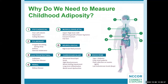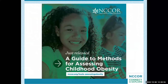There are numerous adverse health outcomes shown to be associated with obesity in children, which provides strong support for the potential value of measuring adiposity and intervening early. Earlier this year, NCORE released the new user guide, a guide to methods for assessing childhood obesity. You can find the guide in both HTML and PDF formats on the site listed on this slide.